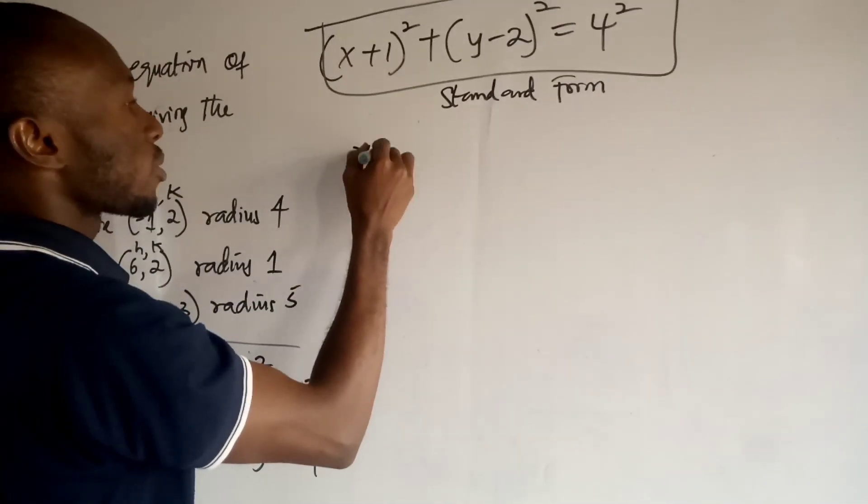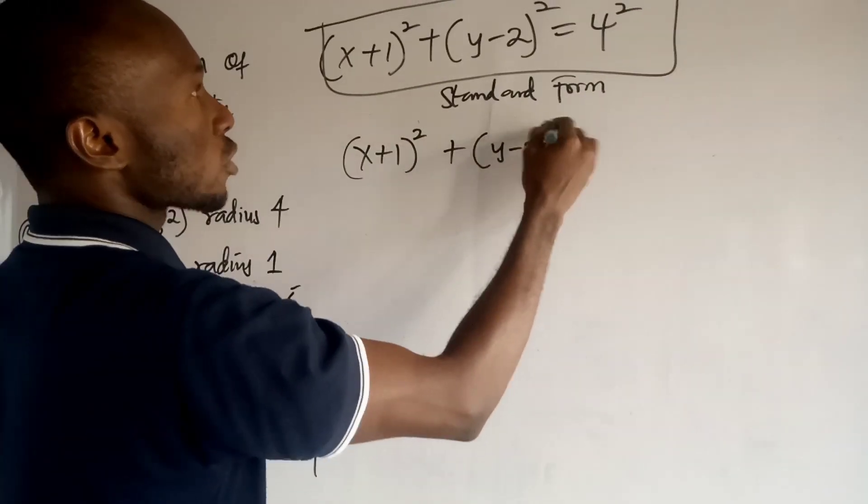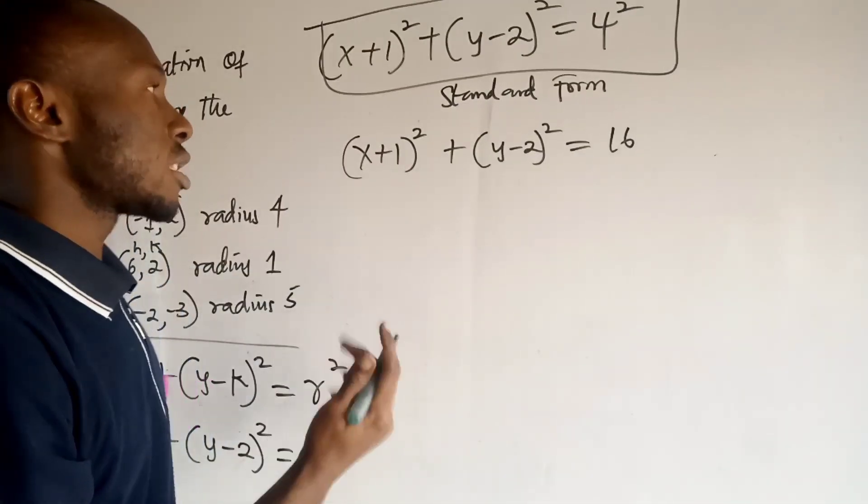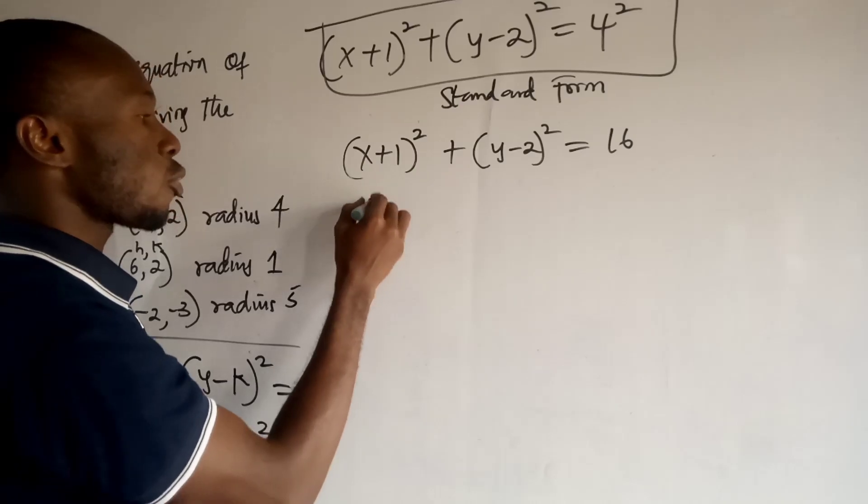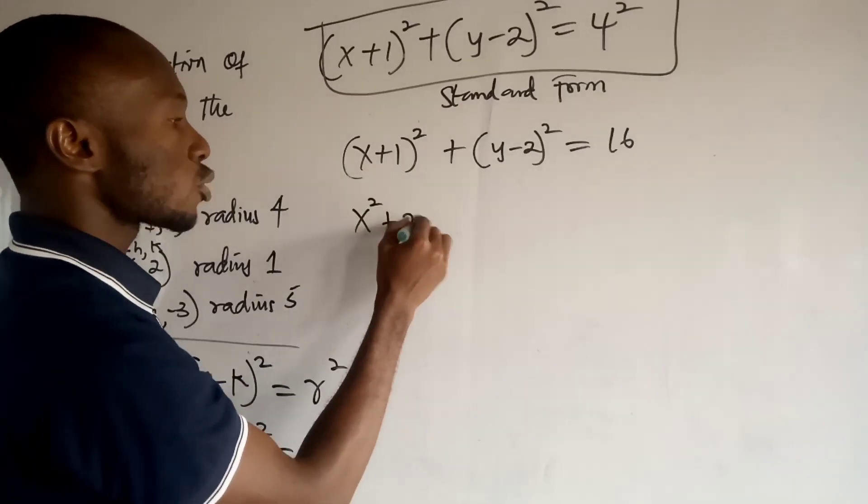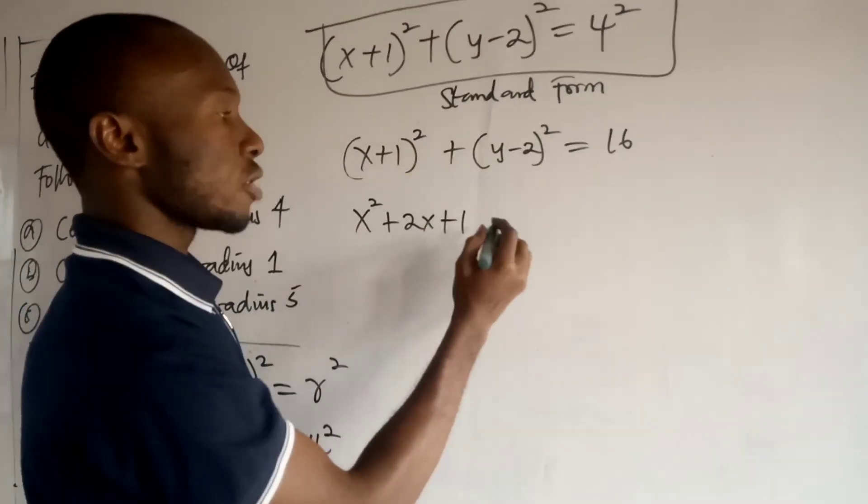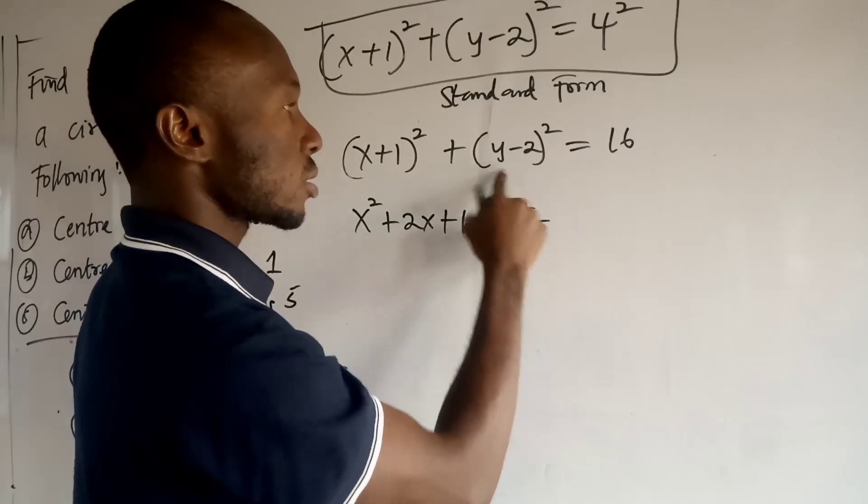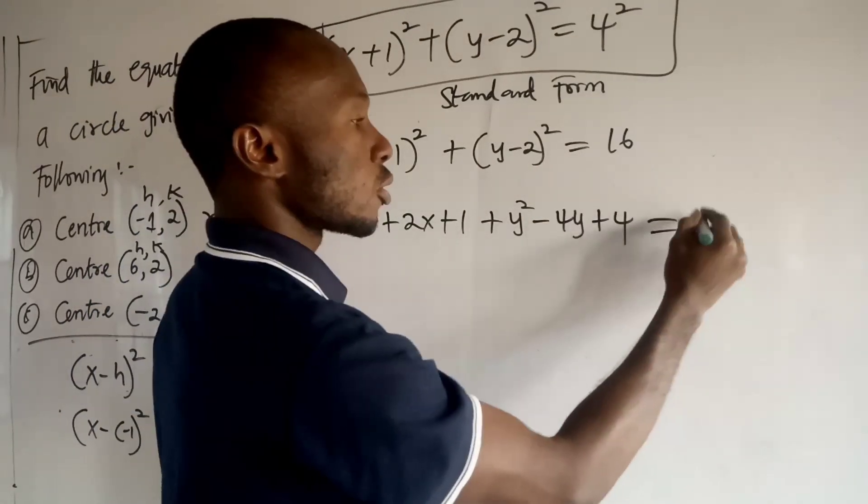So we have x plus 1 all squared plus y minus 2 all squared equal to 4 squared here is 16. So the next thing we want to do is to expand this guy. When you expand x plus 1, you have x squared plus 2x plus 1. Then if you expand this guy, you get y squared minus 4y plus 4, then equal to 16.